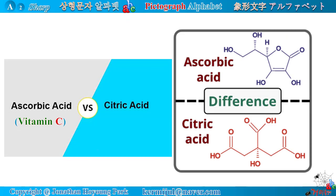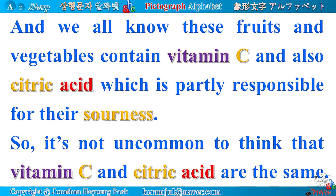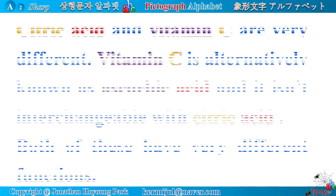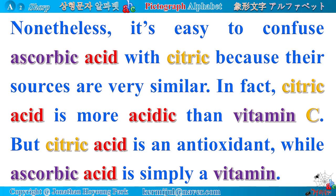Comparison of citric acid and ascorbic acid — are they the same or different? When people hear vitamin C, they picture citrus fruits like lemon, orange, and lime. These fruits contain both vitamin C and citric acid, so it's not uncommon to think they are the same. However, citric acid and vitamin C are very different. Vitamin C is alternatively known as ascorbic acid and is not interchangeable with citric acid. Citric acid is more acidic than vitamin C, and citric acid is an antioxidant, while ascorbic acid is simply a vitamin.